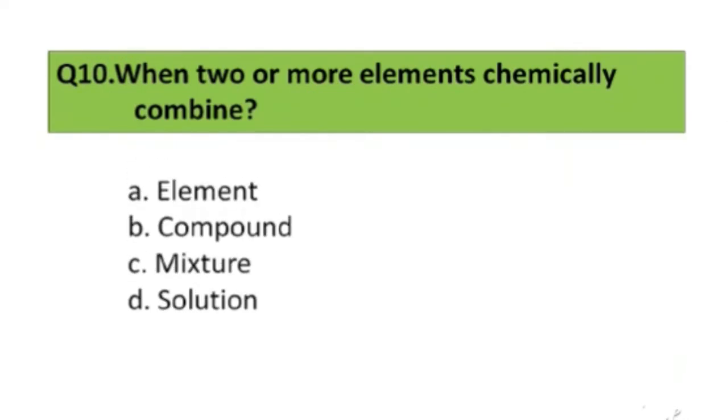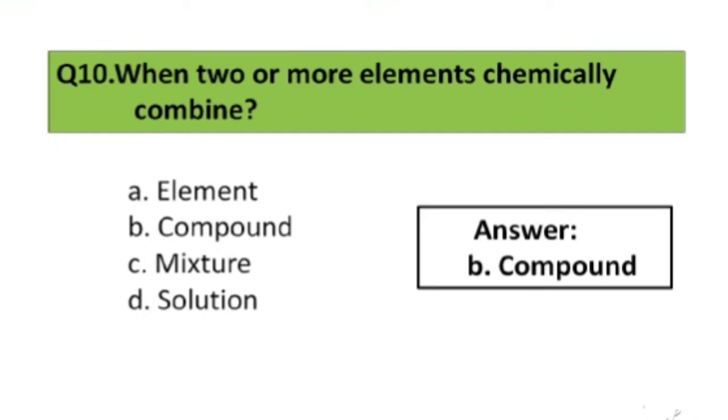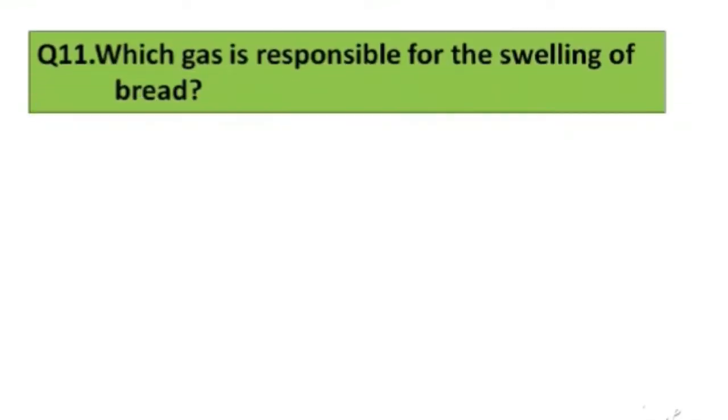Question number 10. When two or more elements chemically combined: A. Element, B. Compound, C. Mixture, D. Solution. The right answer is option B, Compound.